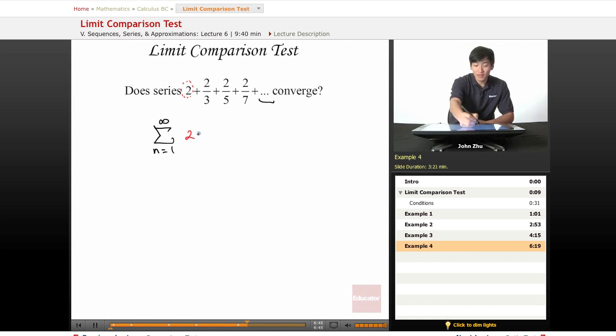And to find the r term, we just simply take 2 over 3 divided by 2, or 2 over 5 divided by 2 over 3. Simply a term divided by its previous term.